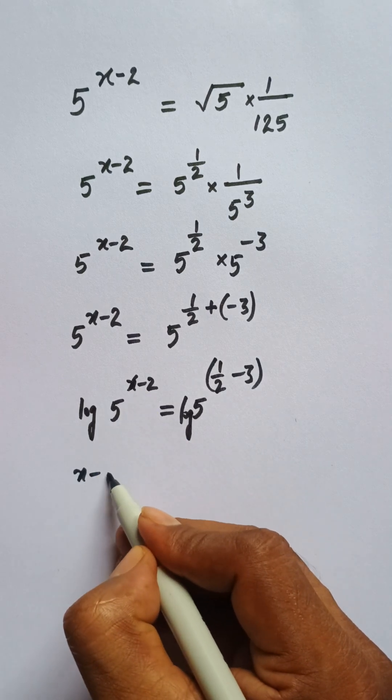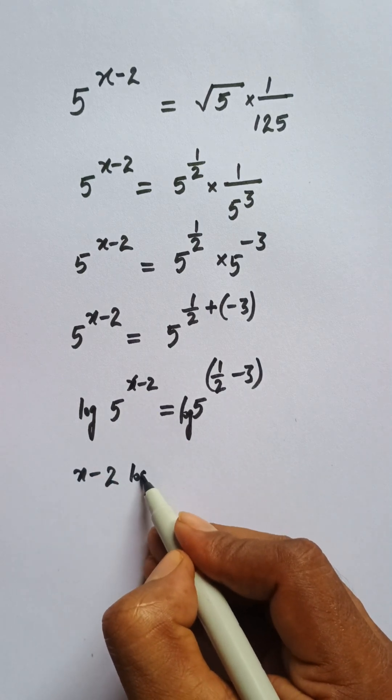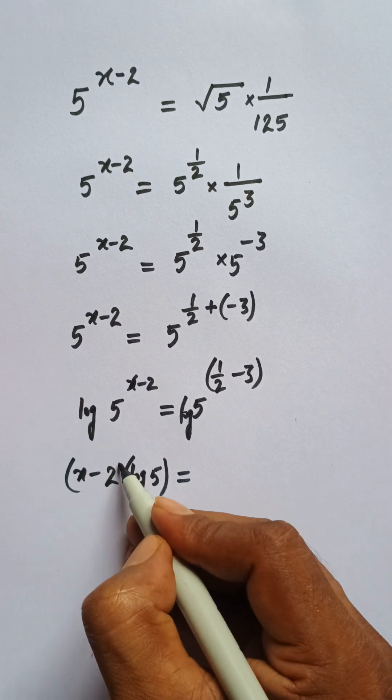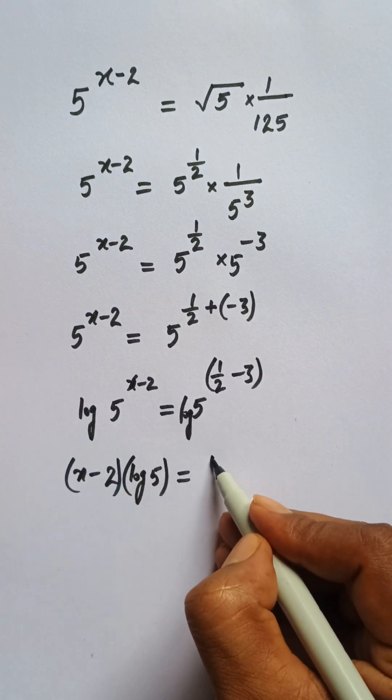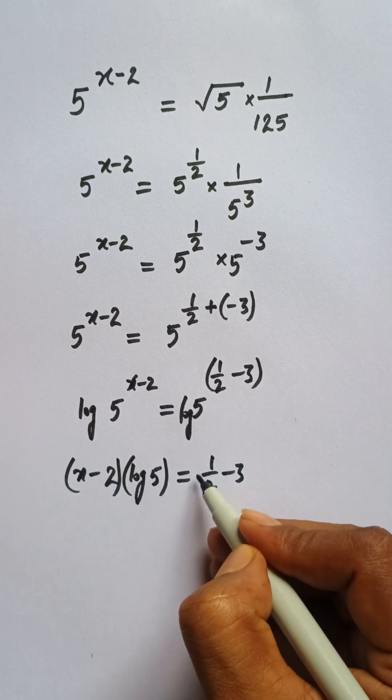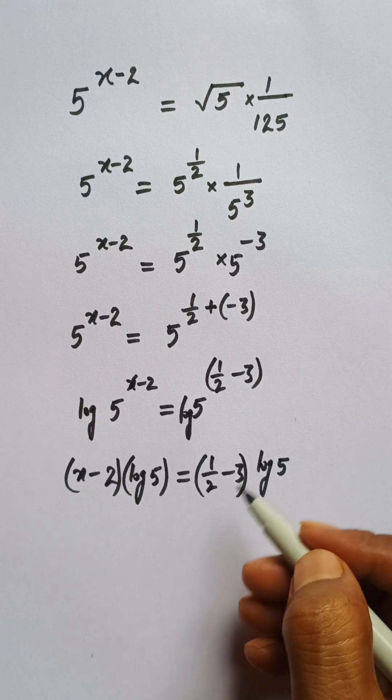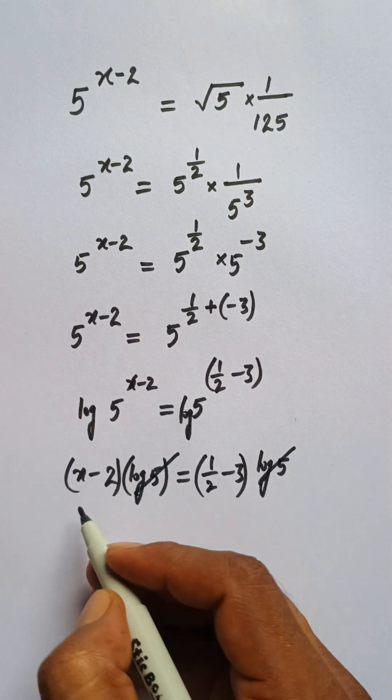Now this x minus 2 will come in front of log 5, and we have 1/2 minus 3 times log 5. Now we can easily cancel this log 5.